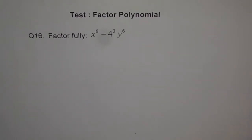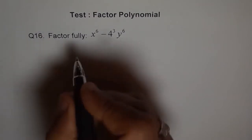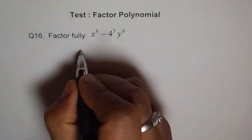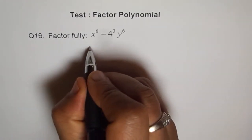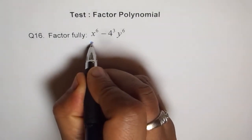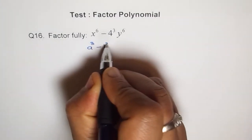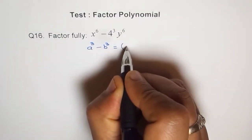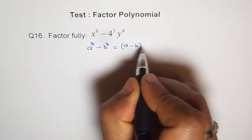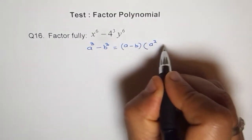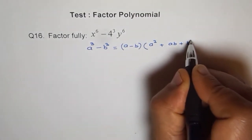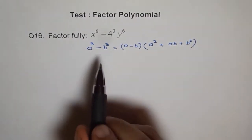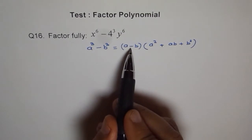First and foremost, do you remember the formula for difference of cubes? Let's write that down. The difference of cubes is: if we have a cube minus b cube, then that equals a minus b, times a square plus ab plus b square. Remember: if it is minus here, then minus here and plus there.